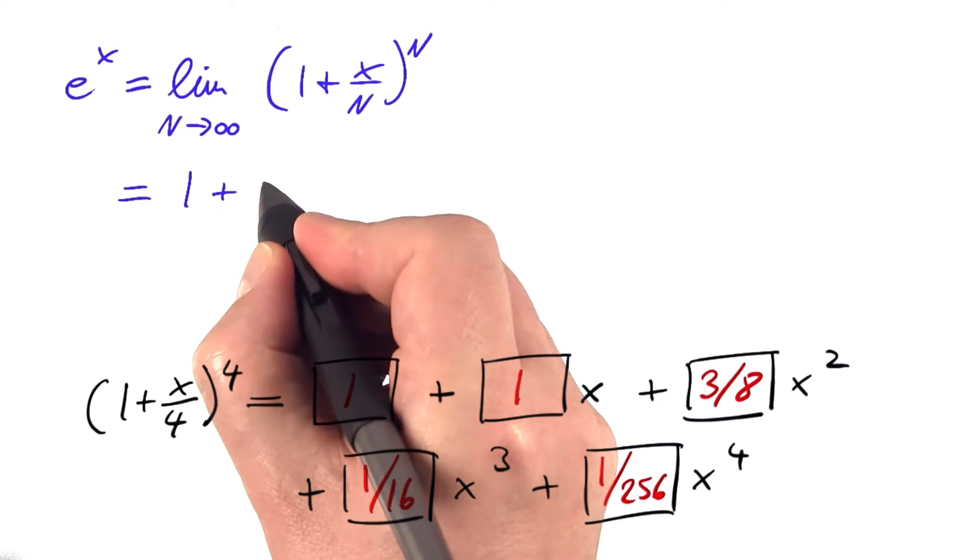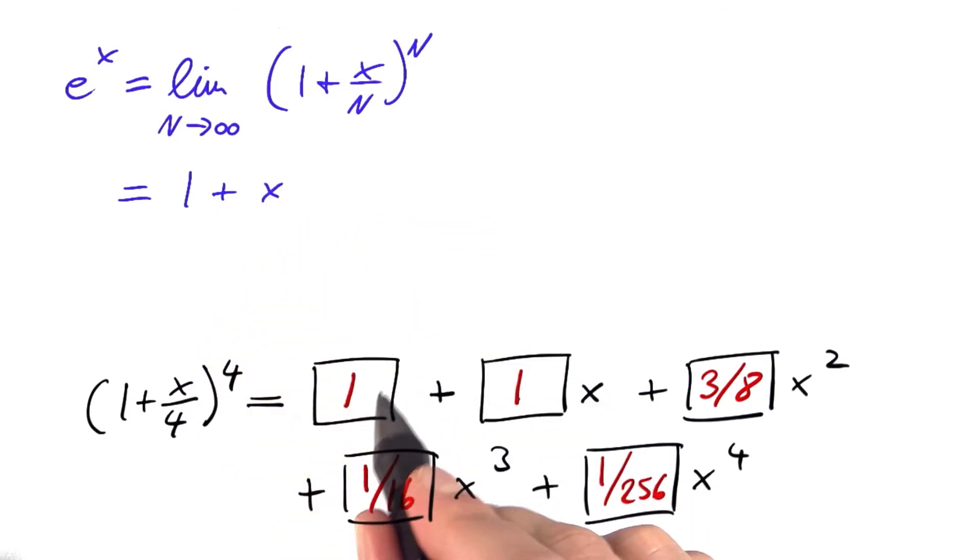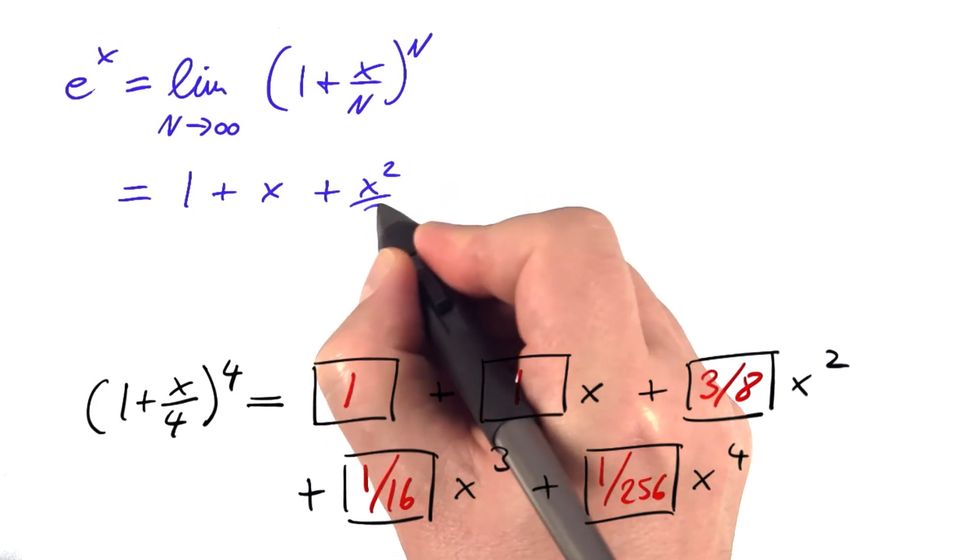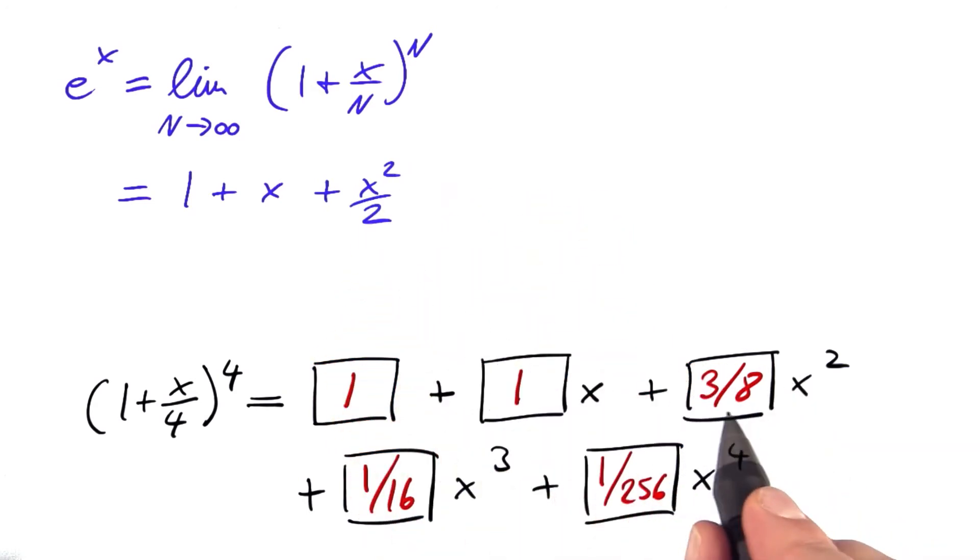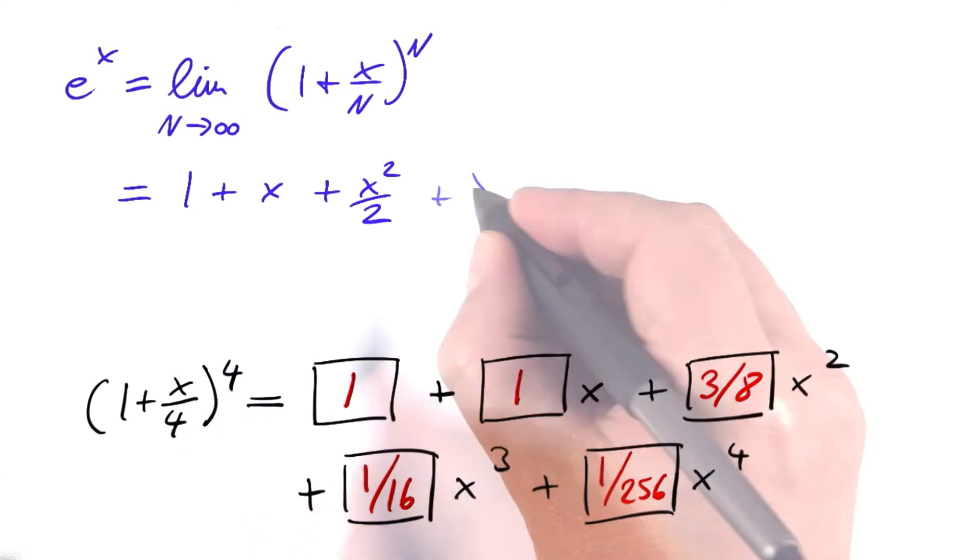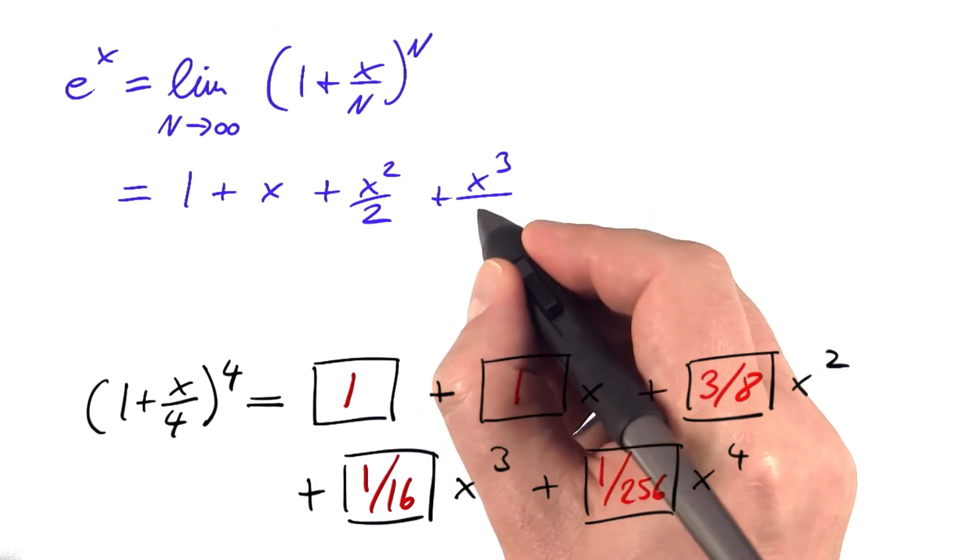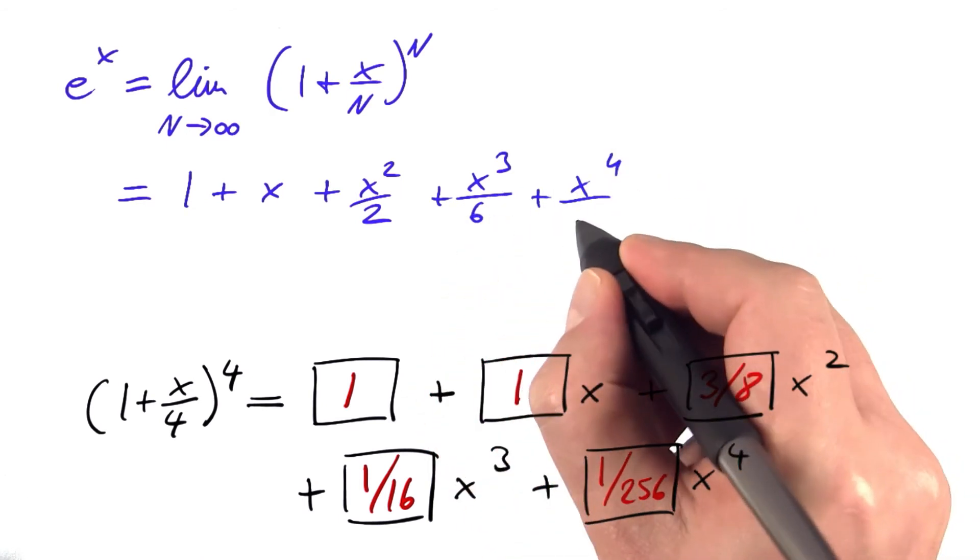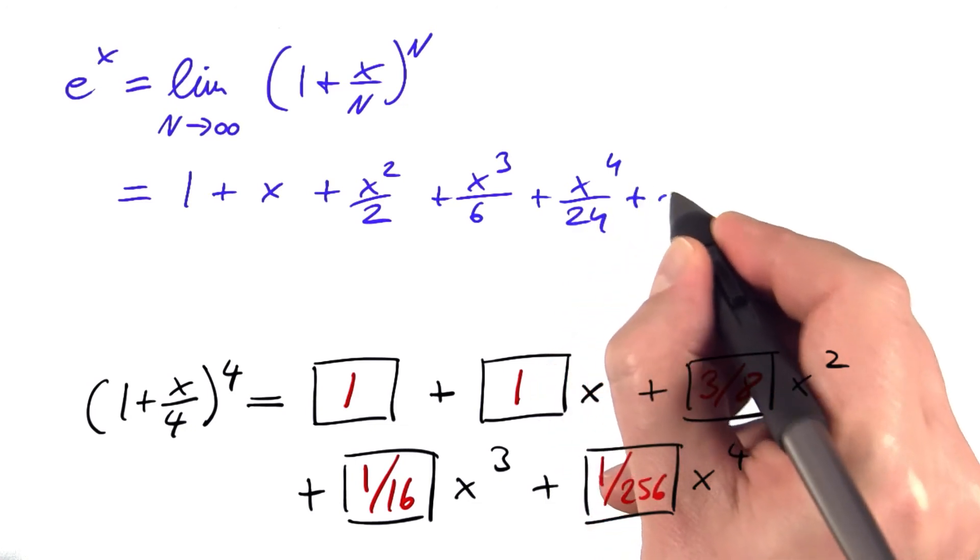And the result is: it's 1 + x. We have that already. 1 + x + x²/2. You see, we're close. 4/8 would be 1/2. We've got 3/8 with that 4 here. Plus x³/6 plus x⁴/24 plus and so on.